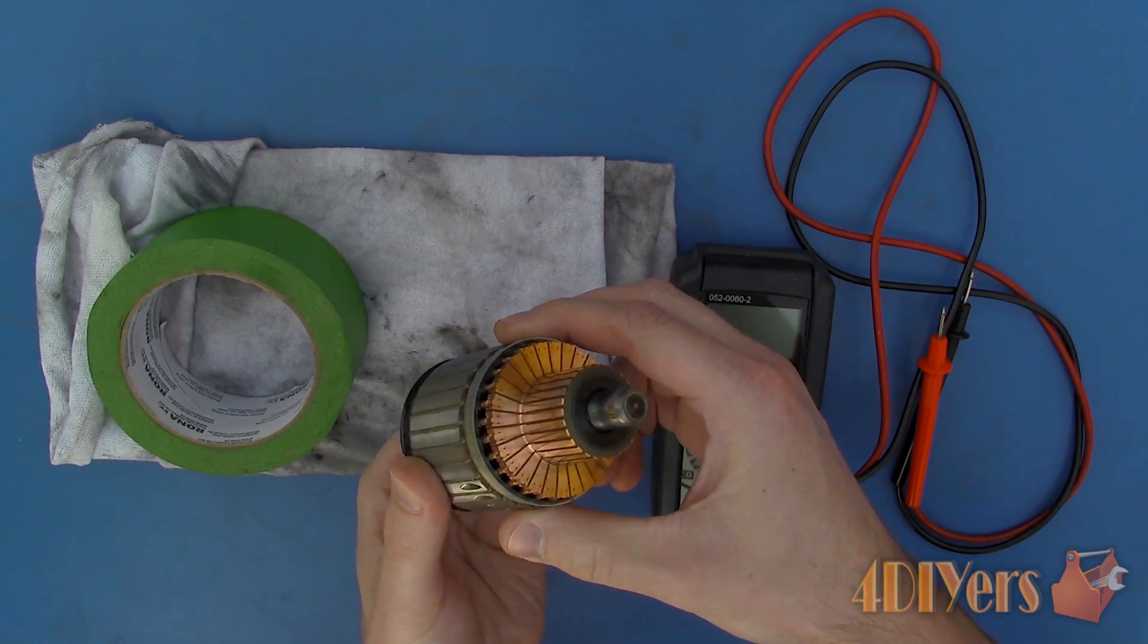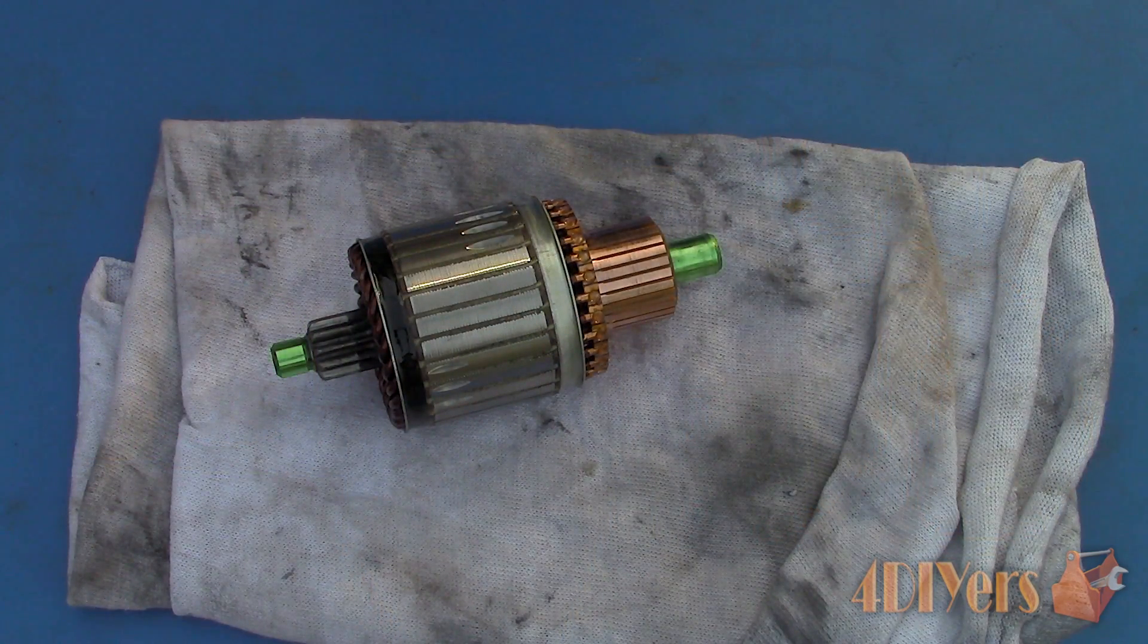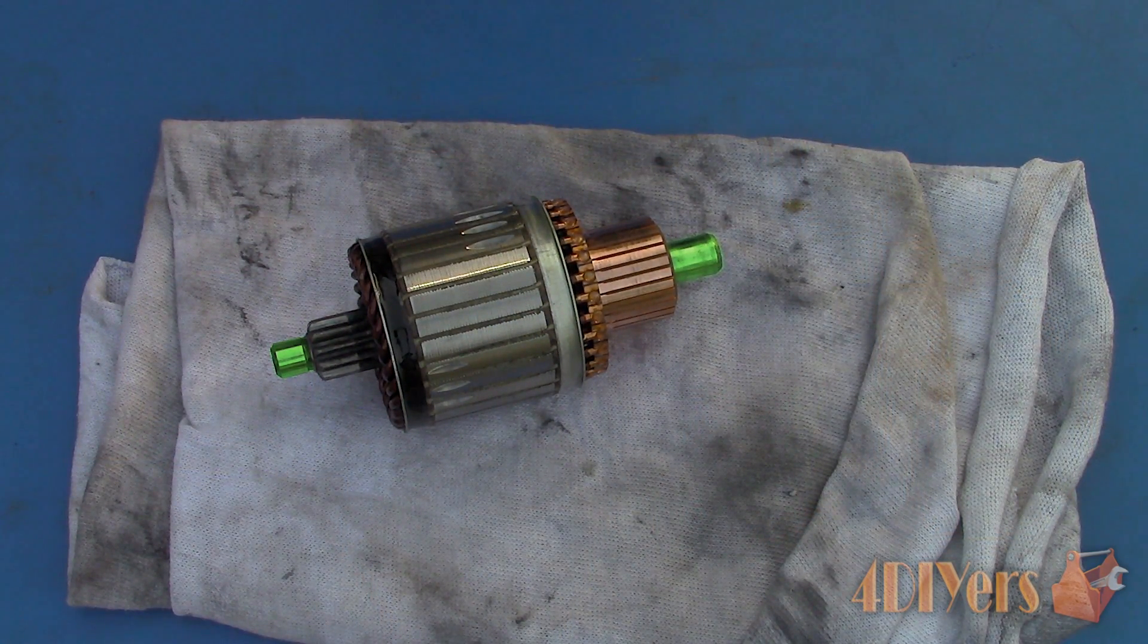First, starting out with the basic parts of an armature and a very brief description just before we start the tests. Here is the shaft which allows the assembly to rotate in a bearing or bushing.